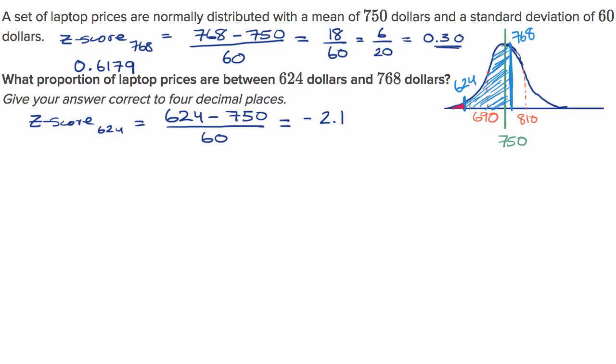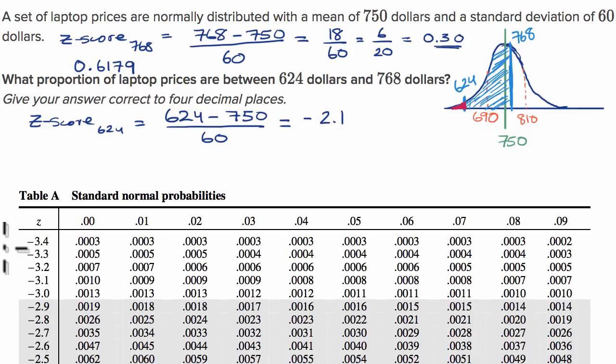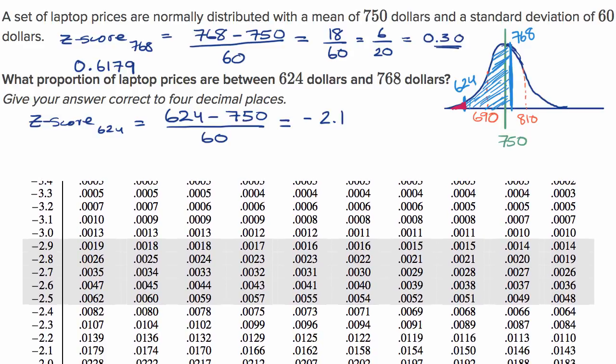To figure out the proportion that is less than that, this red area, we go back to our z-table, to the first part of the z-table. Same idea, but this starts at a z-score of negative 3.4, 3.4 standard deviations below the mean. This is our zero hundredths, one hundredths, two hundredths, and so on. We want to go to negative 2.1, or negative 2.10 to be precise.